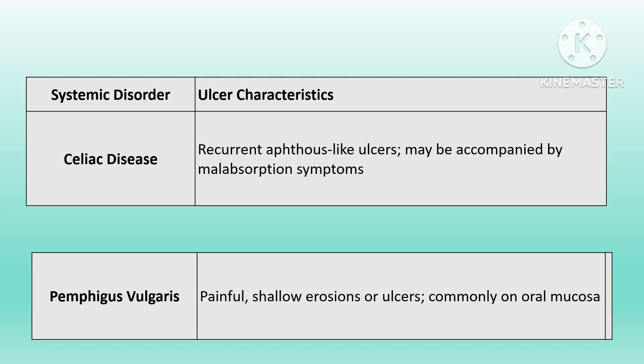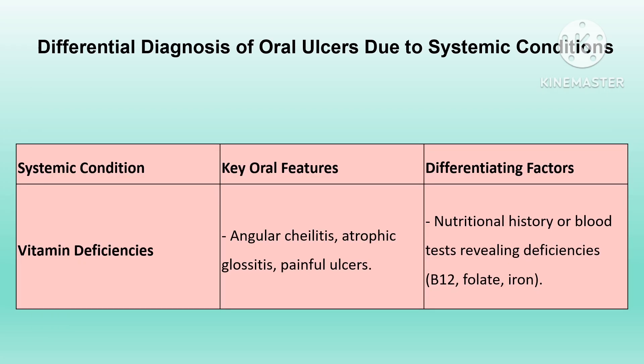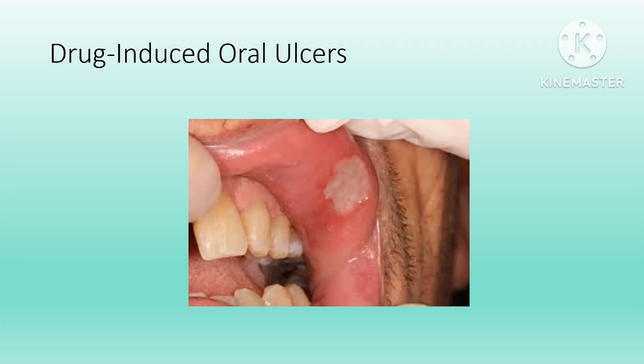Nutritional deficiencies — vitamin B12, iron deficiency, and folate — can all lead to ulcers on the tongue or mucosal surfaces. Additionally, drug-induced ulcers are painful recurrent ulcers often with a temporal relation to new or changed medication.